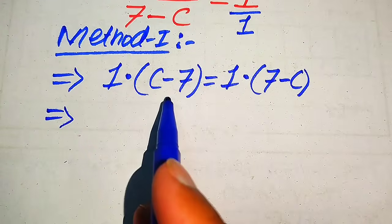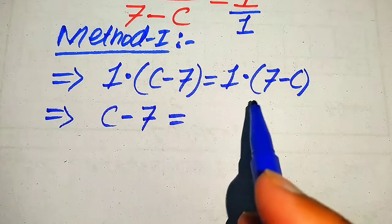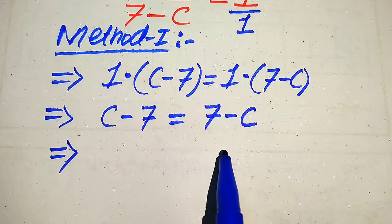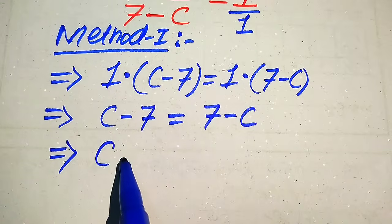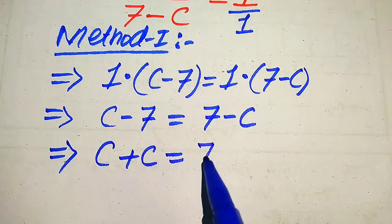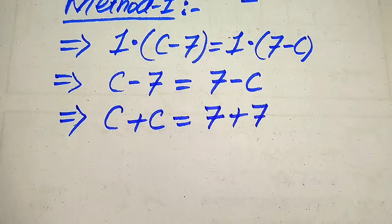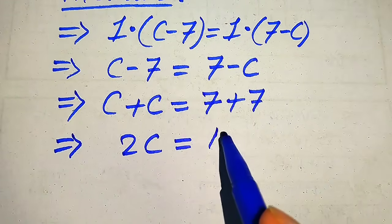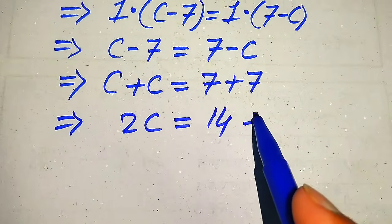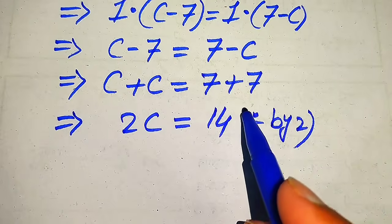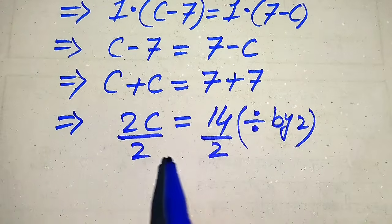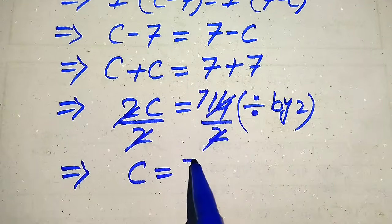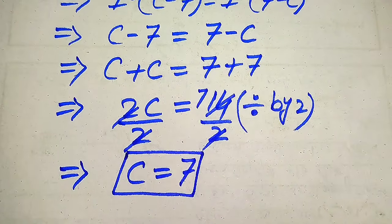1 times this term is equals to c minus 7, and 1 times this term is equals to 7 minus c. In the next step we move variable terms to the left hand side: minus c becomes plus c, and minus 7 moved to the right hand side becomes plus 7. So c plus c becomes 2c equals 7 plus 7 equals 14. Dividing both sides by 2, we get the value of c is equals to 7.